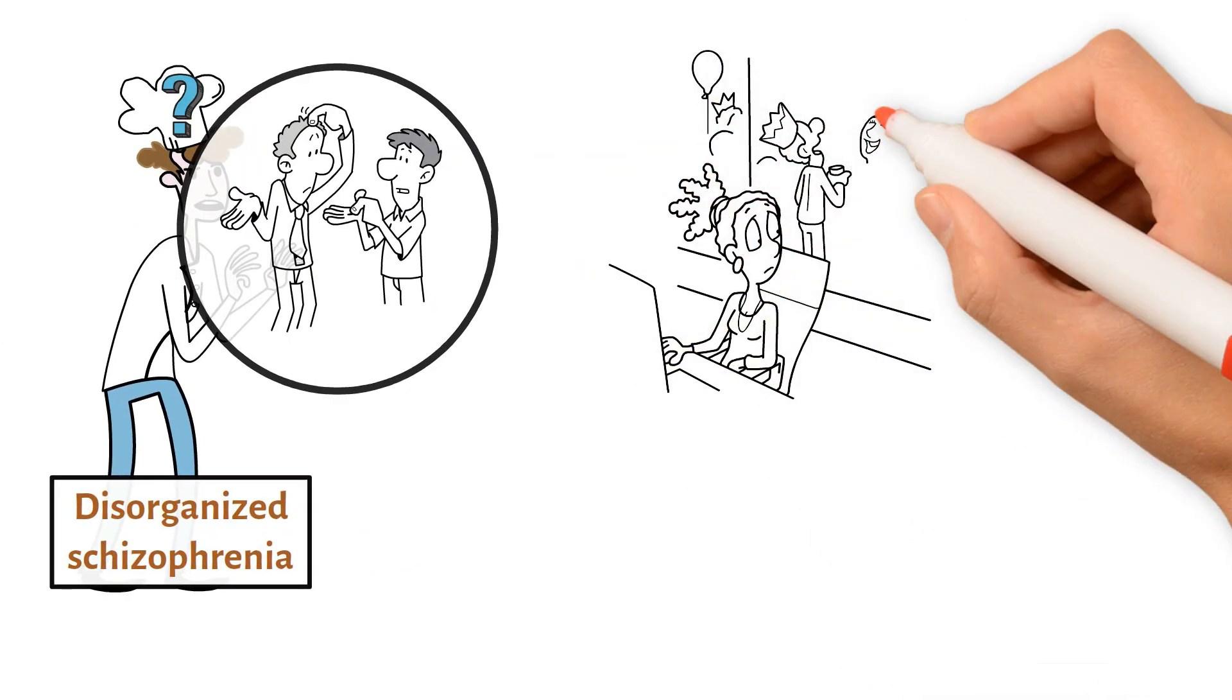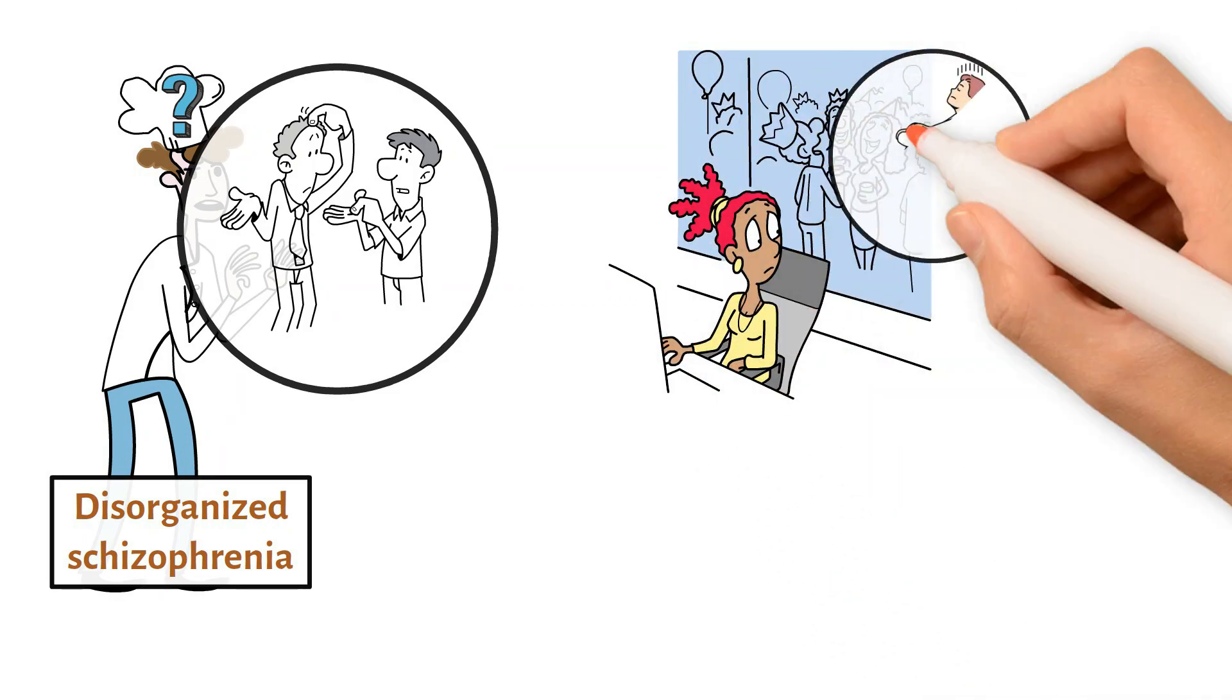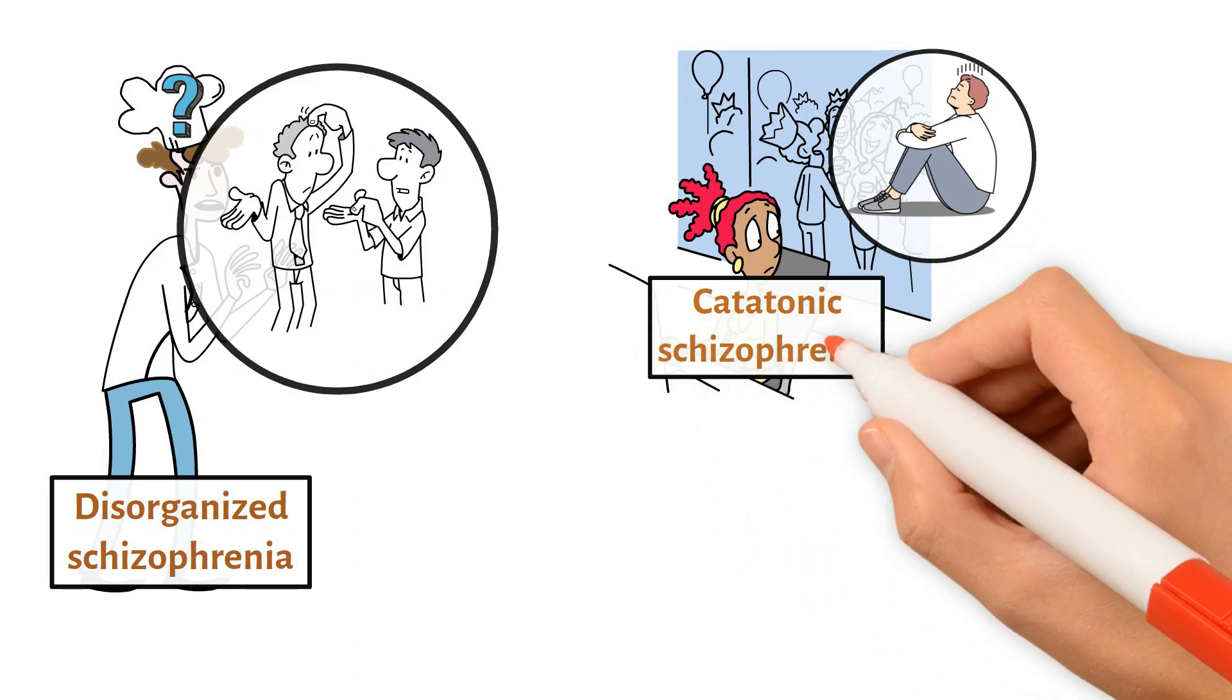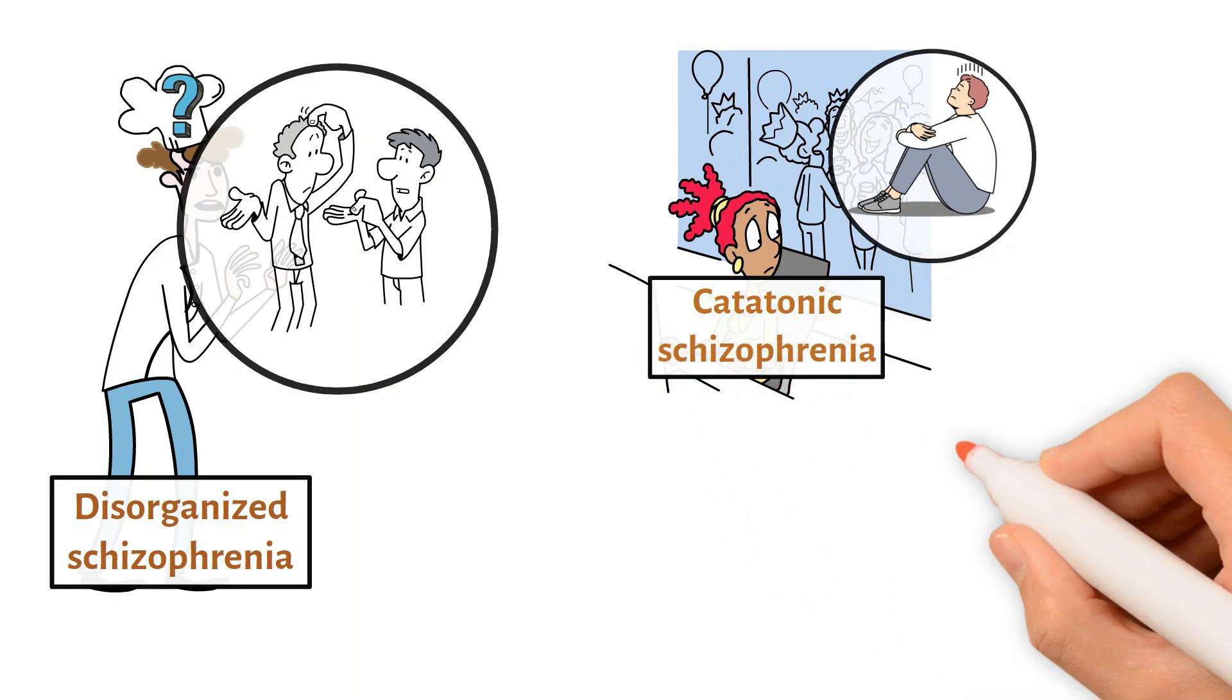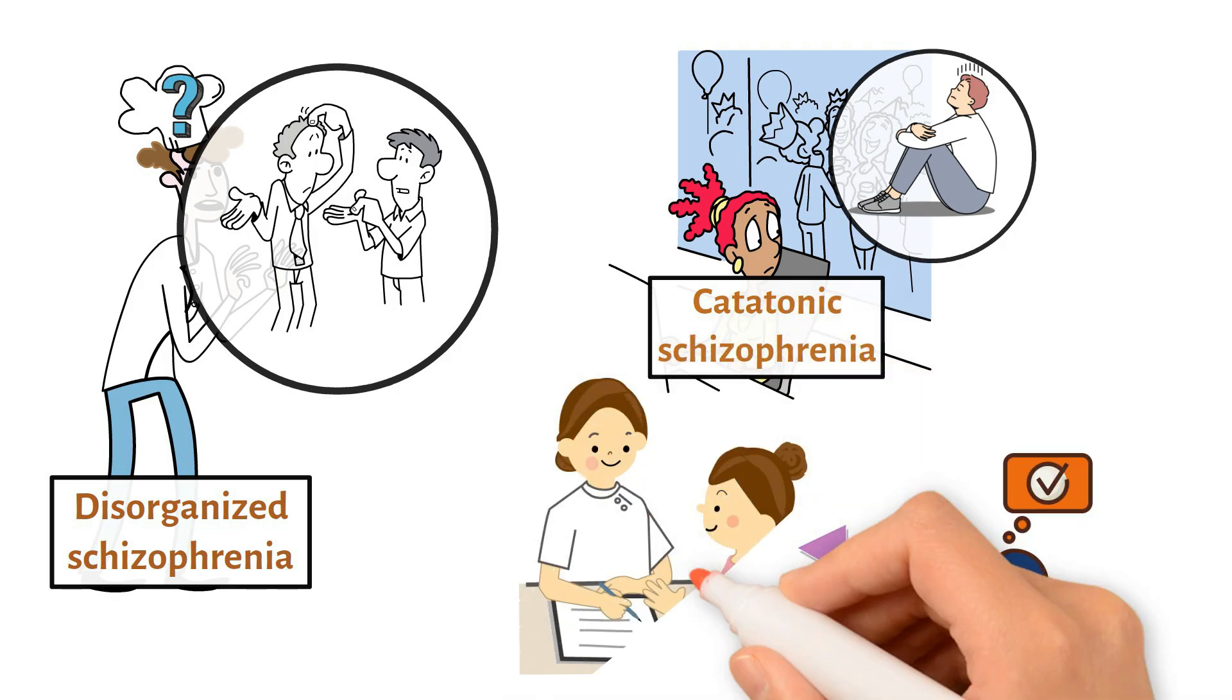Next, catatonic schizophrenia. This is a rare version where people might stop moving or talking for a long time, or move in weird, jittery ways. Each type affects people in different ways, making it important to understand which type a person has to help them in the best way possible.